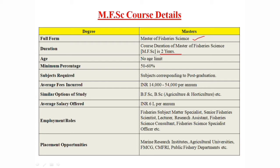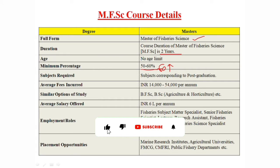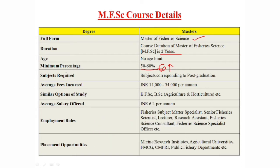We will be able to share 50 to 60% of the students here. If you are a student at the undergraduate level, you are going to try to get a percentage in undergraduate. If you are going to choose subjects, you are going to choose subjects corresponding to post-graduation. The average fees are 14,000 to 54,000 per annum.